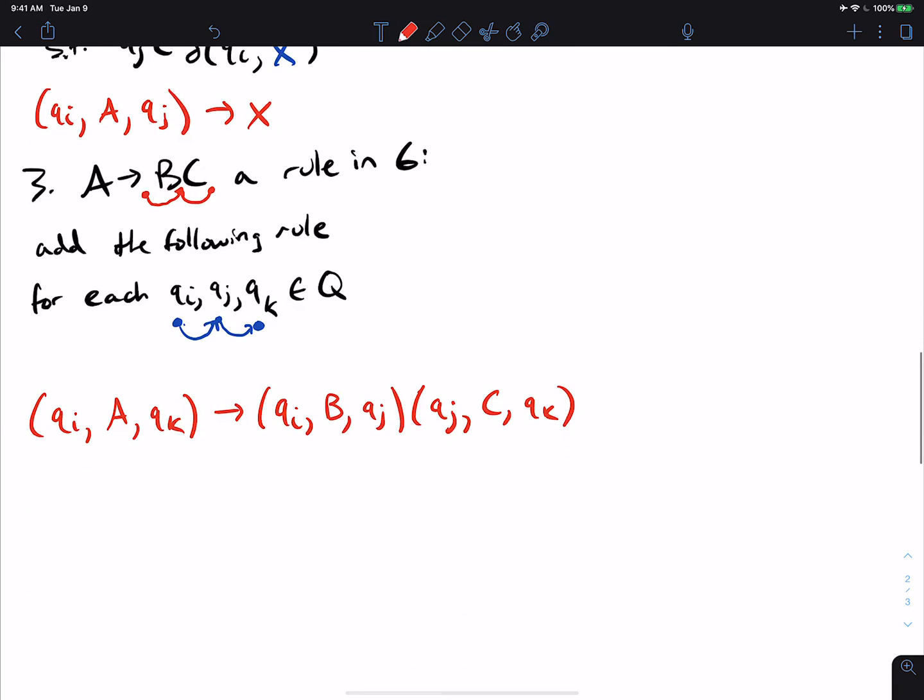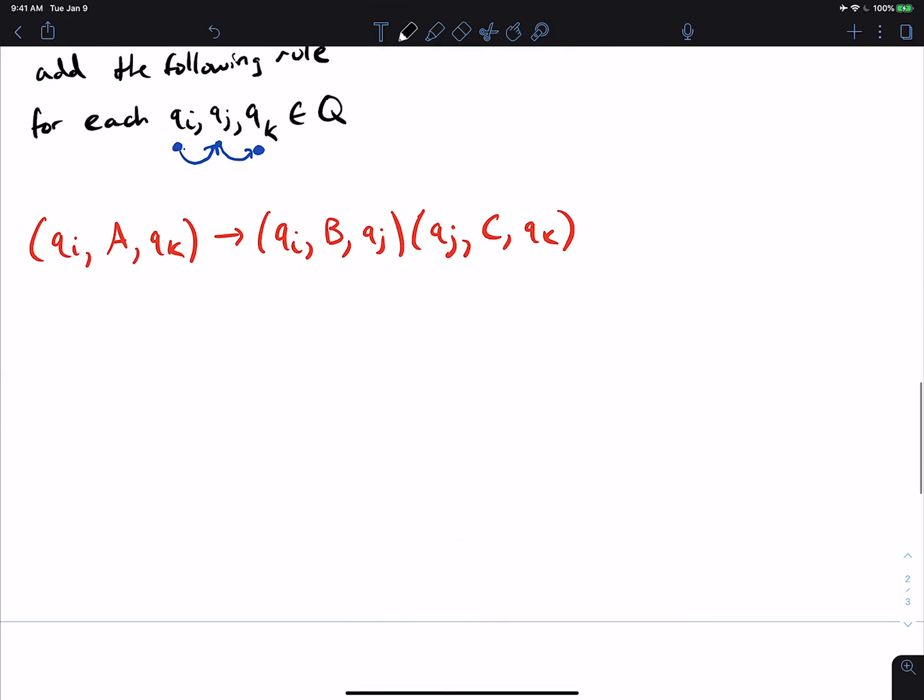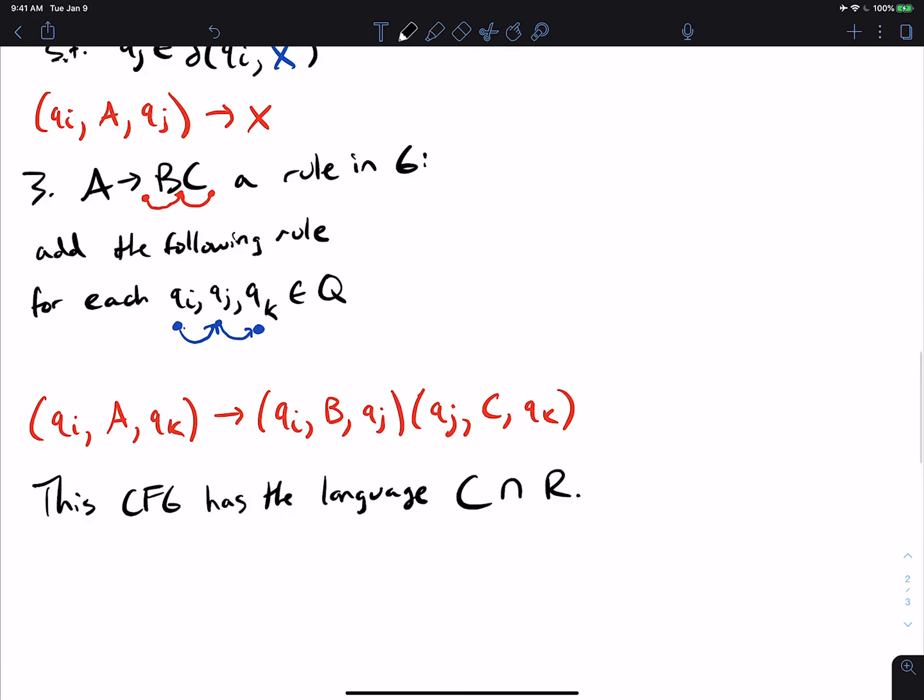this CFG, so this CFG has the language C intersection R. Because, well, we're just mimicking what the CFG would have done as well as at the same time doing what the NFA in this case would have done. So I hope that was interesting. Please leave a like and subscribe and I'll see you next time.